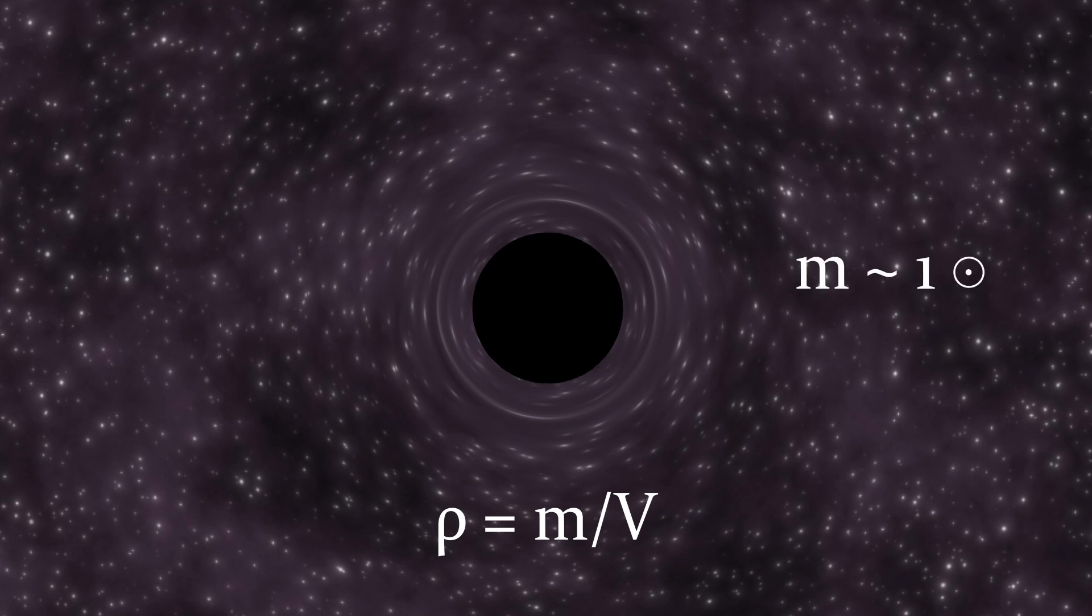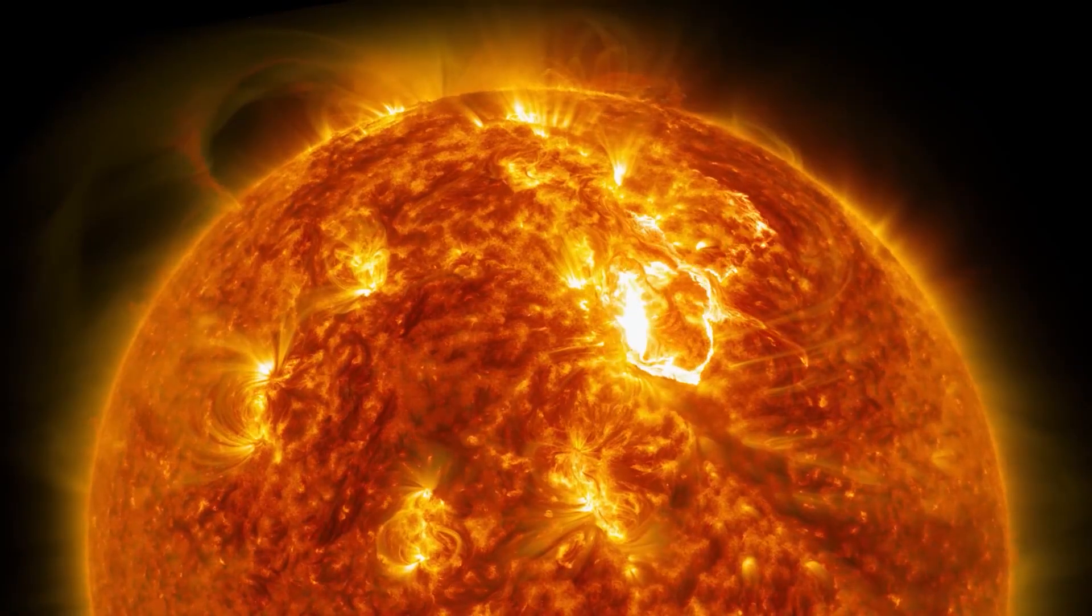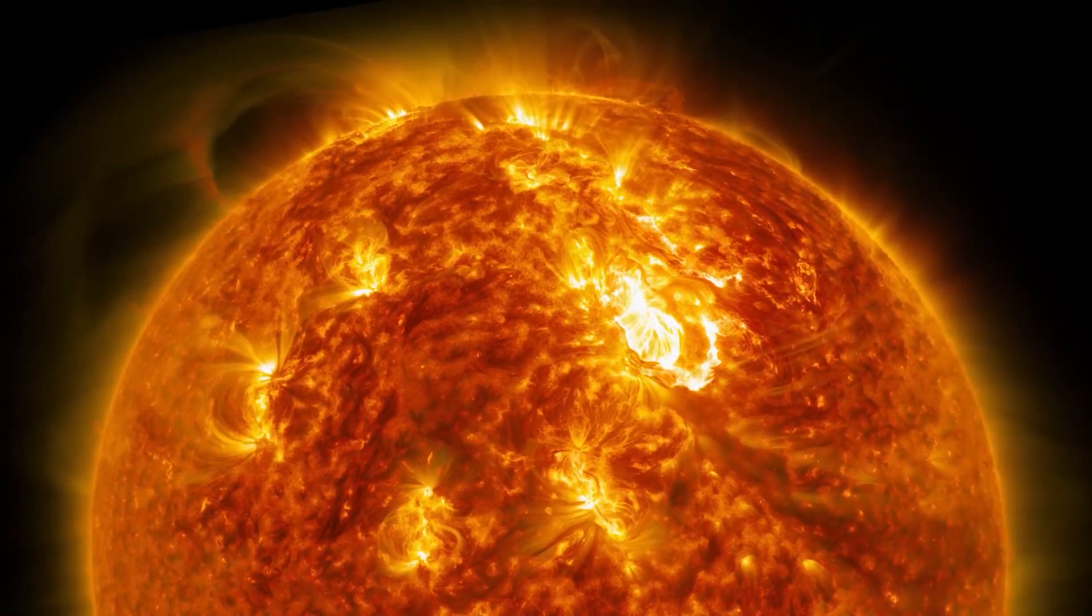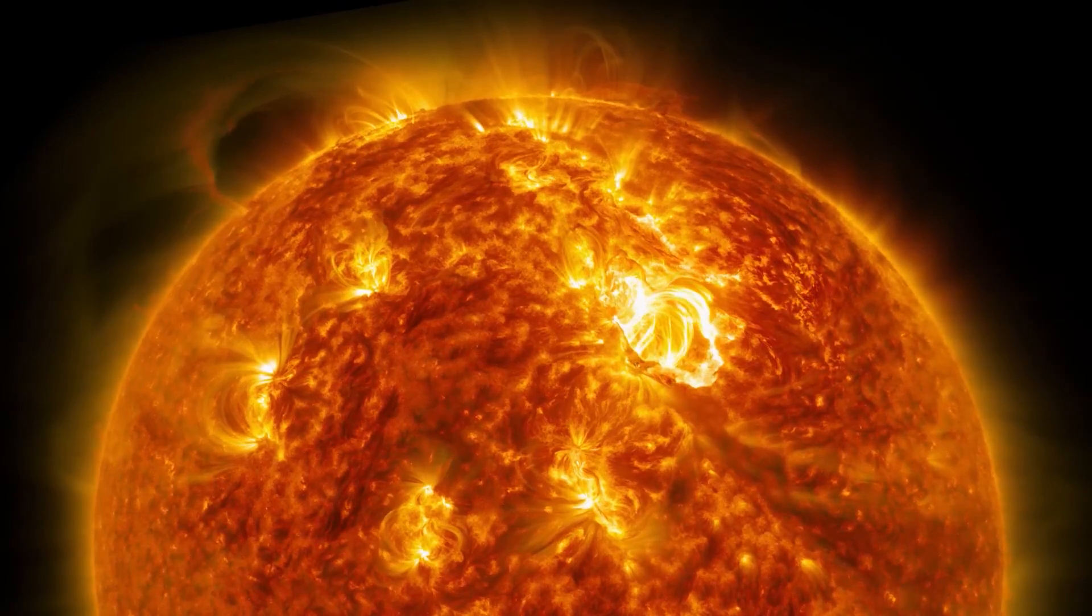For instance, stellar mass black holes have enormous densities, around 10 to the power of 20 kilograms per cubic meter, exceeding the density of atomic nuclei. To turn the sun into a black hole, it would need to be compressed to a radius of about 3 kilometers from its nearly 700,000 kilometer current radius.